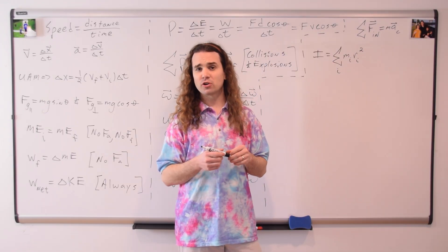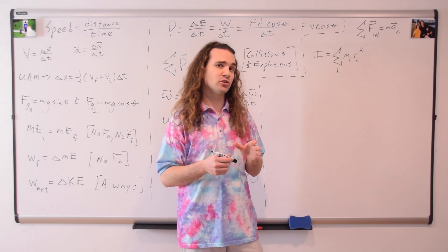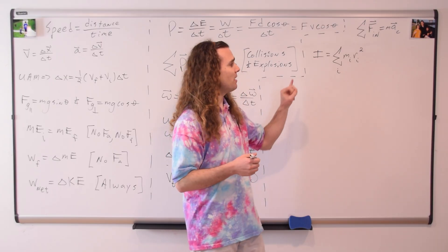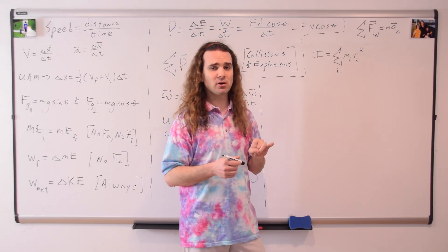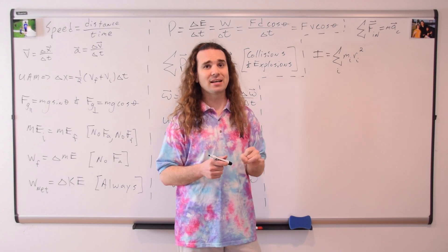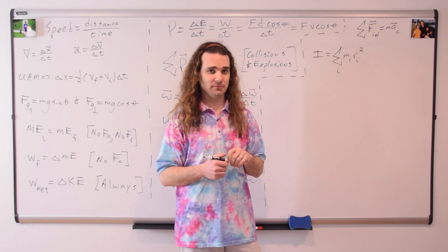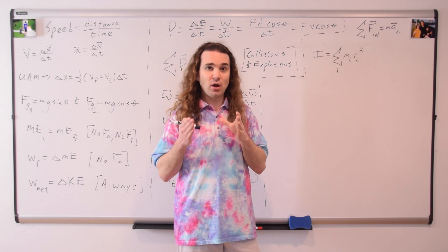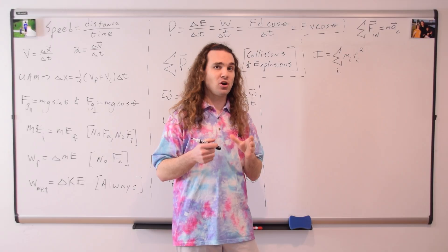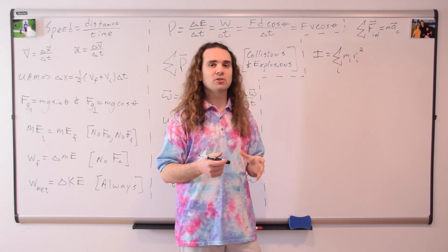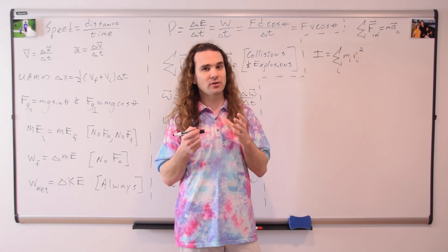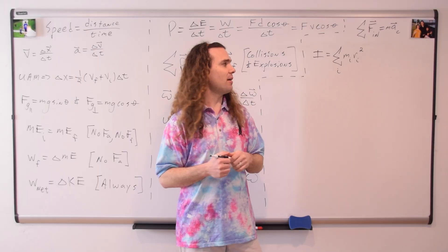The moment of inertia, or rotational mass, of a system of particles is equal to the sum of the mass of each particle times the square of the distance from the axis of rotation. Remember, moment of inertia is the measure of an object's, or a system of particles', resistance to an angular acceleration.